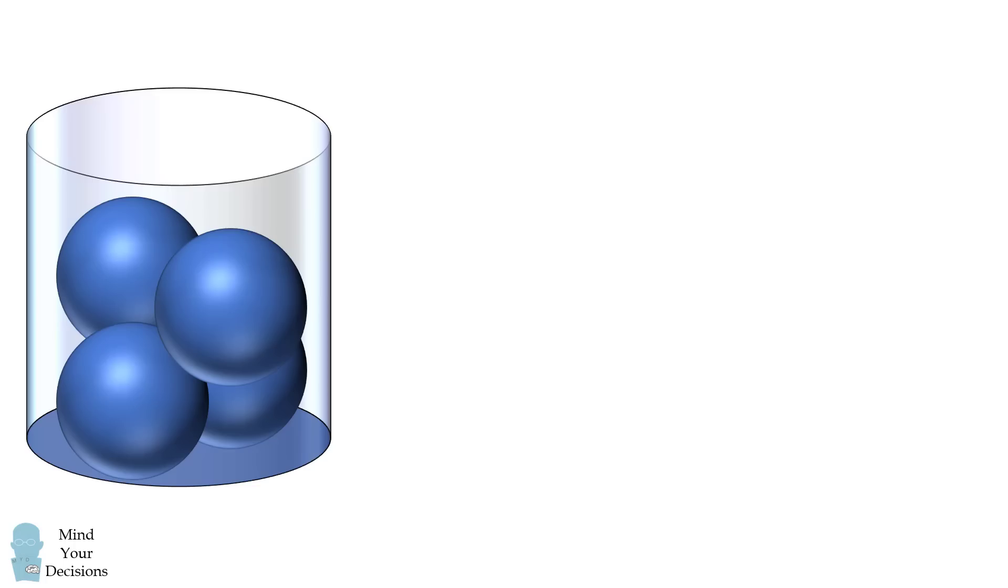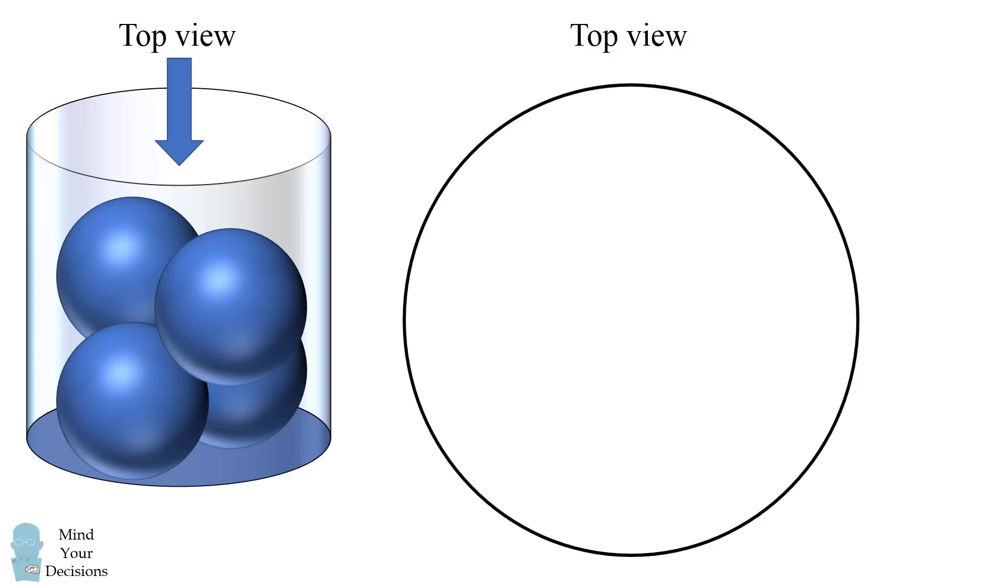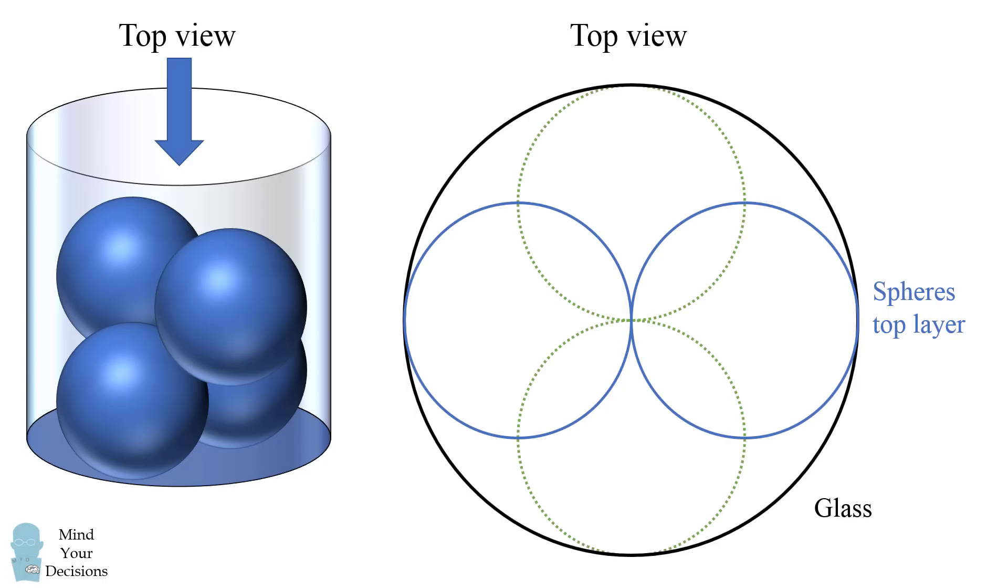So one way to approach this problem is to consider looking from the very top of the glass. What would you see? Well, from the top, you would see the border of the glass as a perfect circle. The two spheres in the top layer, their border would appear as two perfect circles that are tangent to each other and tangent to the glass. The spheres in the bottom layer would appear to be the same except they're rotated 90 degrees, and some of the circle may be covered up by the spheres in the top layer.